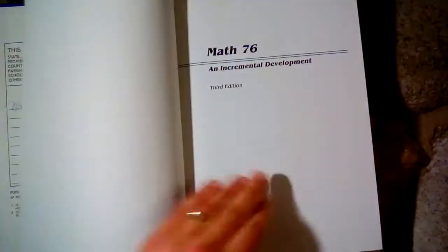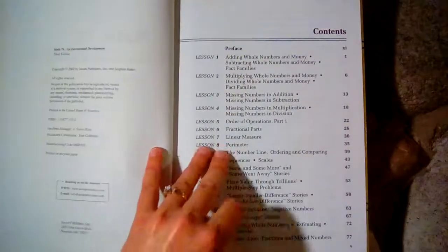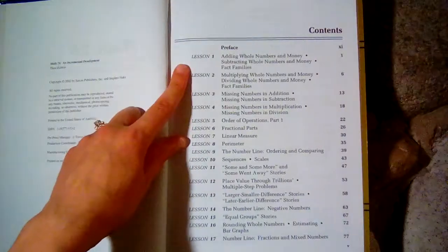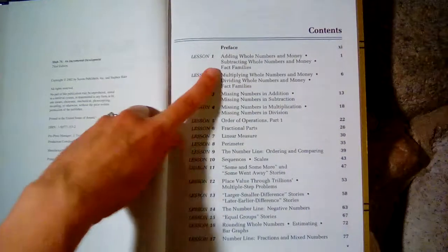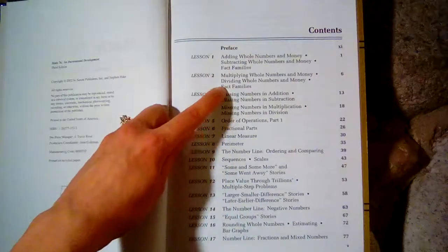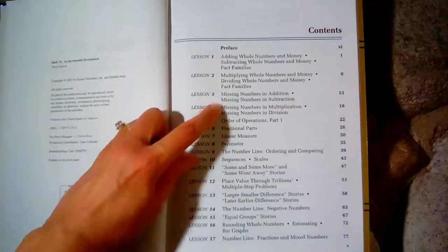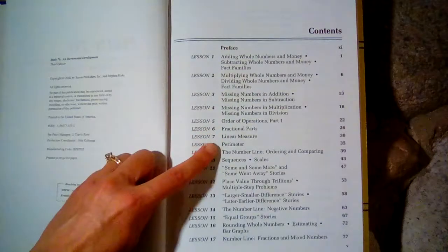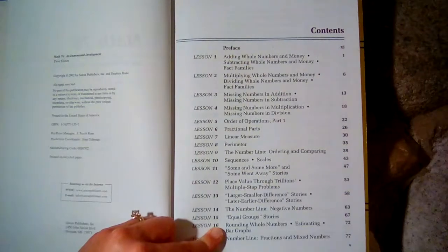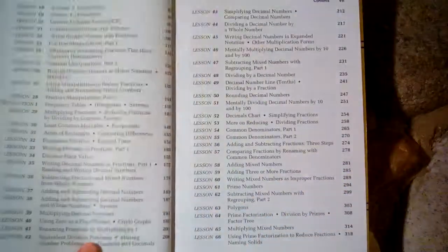I believe it also has 140 lessons, just like the first one. But you'll notice that there are more concepts covered per lesson. This has three concepts in Lesson 1, three concepts in Lesson 2, two here, two here, and then one for these.